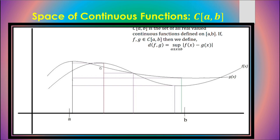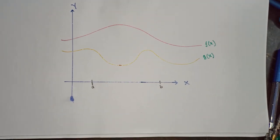The next example is the space of continuous functions, C[a,b]: the set of all real-valued continuous functions defined on the closed interval [a, b]. The metric is defined as the supremum of the absolute differences between the two functions at each point. From the diagram, at each point the two functions have a difference, and we take the supremum — the least upper bound — of all those differences.